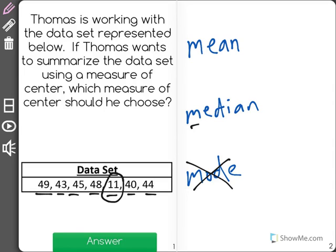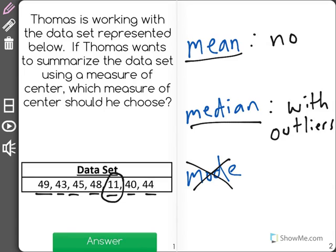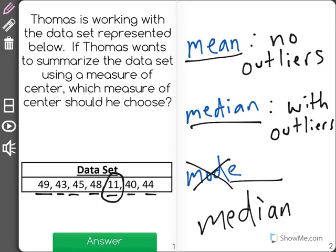So we are going to find the median. The median is the measure of center you should find if there are outliers. Mean is a better measure of center if there are no outliers in the data set. But in this case, since we do have 11 as an outlier, Thomas should find the median so that the average is not greatly changed because of that outlier.